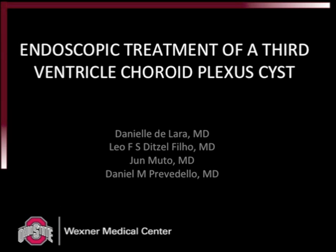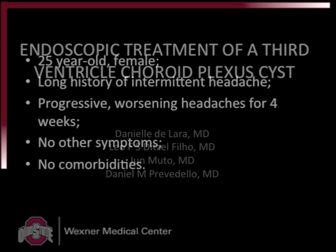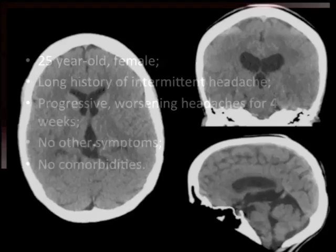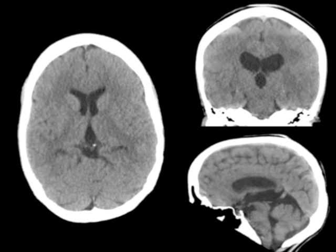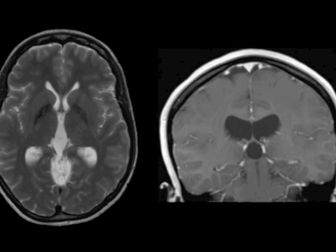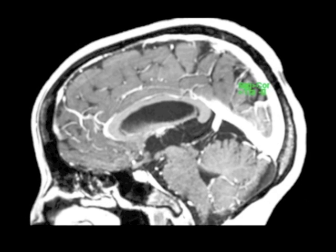This video represents an endoscopic transcortical treatment of a third ventricle choroid plexus cyst. A 25-year-old lady presented with progressive intermittent headaches for four weeks. She came to the emergency department where mild hydrocephalus was detected on CT, followed by an MRI that showed the hydrocephalus was mainly caused by third ventricle enlargement.